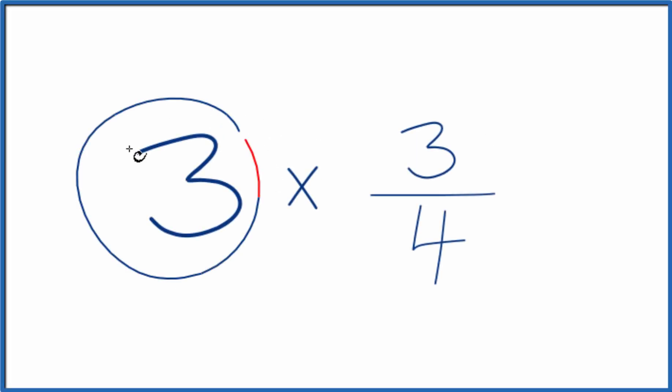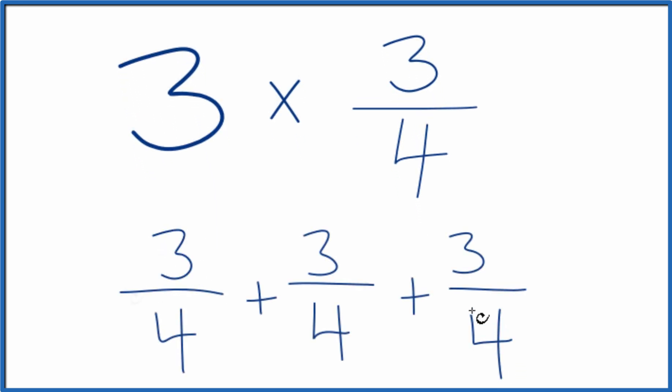In this video, we'll multiply 3 times 3 fourths. So let's look at this two ways. First, we could say we have 3 of these 3 fourths. Just add them together, like this.